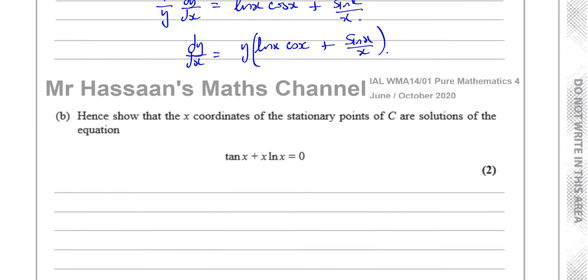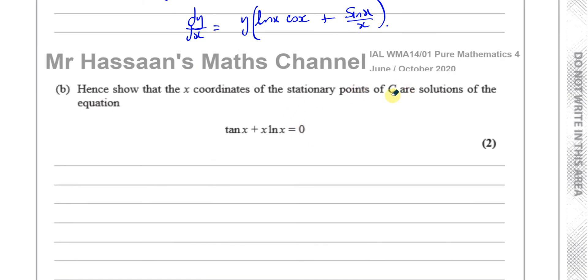Now for part b, it says hence show that the x coordinates of the stationary points of c are solutions of this equation. So the stationary points is when dy/dx is equal to 0. So we can say that y times ln x times cosine x plus sine x divided by x is equal to 0. So you can say y equals 0, which we don't care about. And we can say ln x times cosine x plus sine x over x equals 0. So we have to rearrange this to make it look like that.